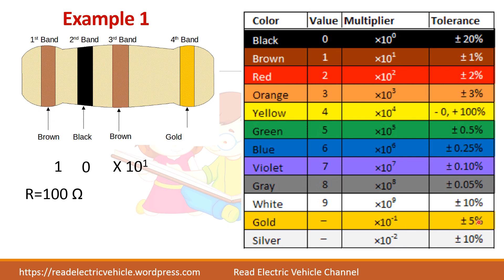Now for the tolerance: the fourth band is gold, and gold has a tolerance of plus or minus 5%. That means the actual resistance can vary by plus or minus 5% of 100 ohms. Five percent of 100 ohms is 5 ohms, so the resistor value can range between 95 ohms and 105 ohms.